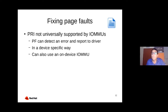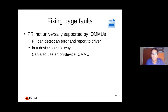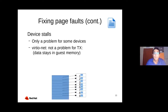Another argument revolves around the practicality of implementing page faults efficiently. There are two main issues. The first has to do with the PRI — the Page Request Interface — which includes support for page faults from devices, but is still not well supported on all current systems. To address this for now, devices can detect and report page faults to the host in a device-specific way, for example through the physical function of the device. If the device has an on-device IOMMU, detecting page faults is probably easier. Another problem often mentioned in this context is device stalls. Stalls are only a problem for some devices, such as the receive queue of the Virtio network device, which gets lots of data from the outside world.